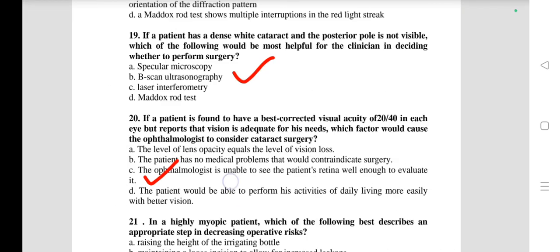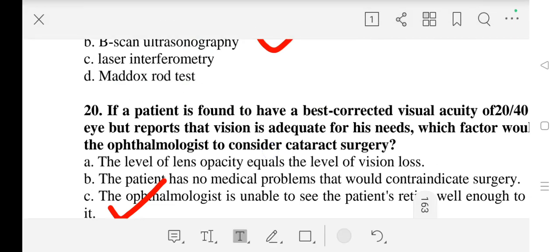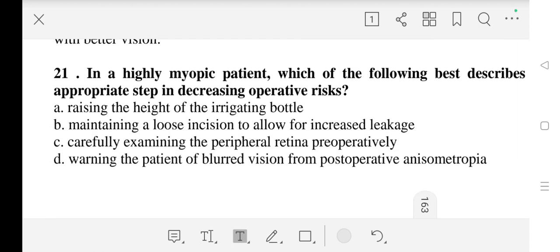Question number 21: In a highly myopic patient, which of the following best describes an appropriate step in decreasing operative risk? Our correct answer is C - carefully examine the peripheral retina preoperatively.